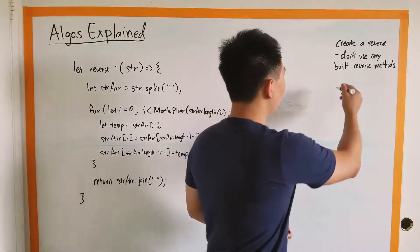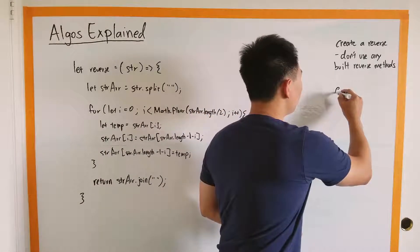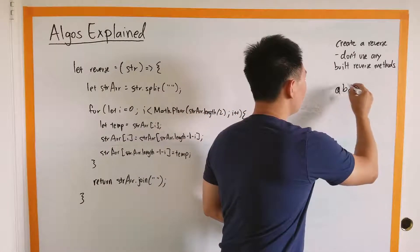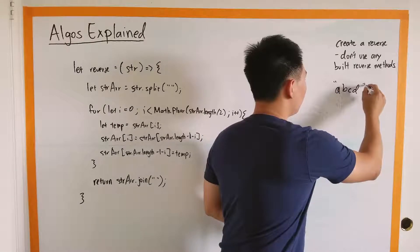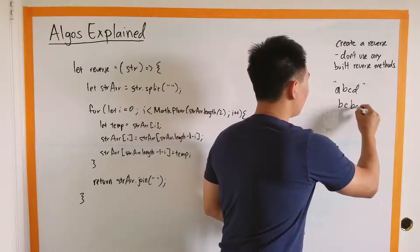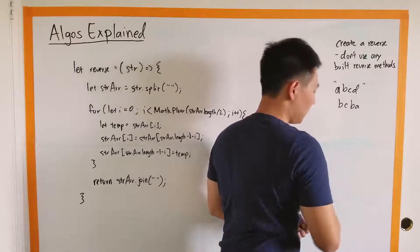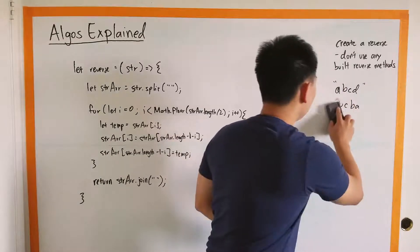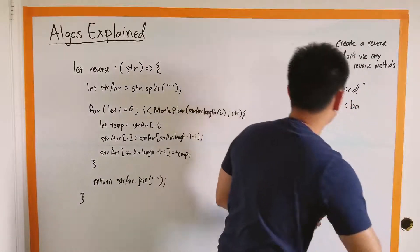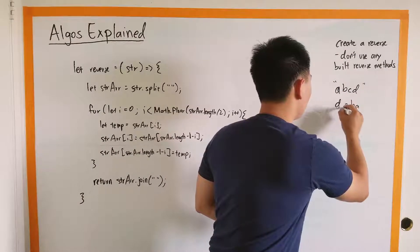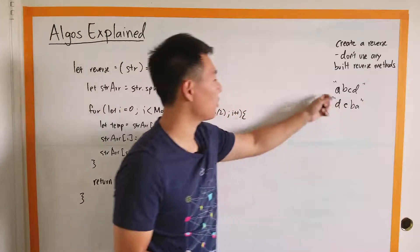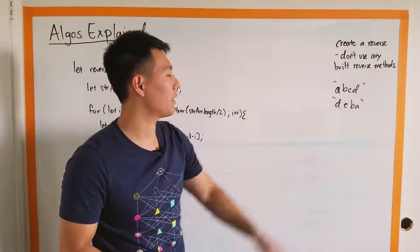So if we're given something like A, B, C, A, B, C, D, then we want D, C, B, A. And so that's what we want if we're given that.